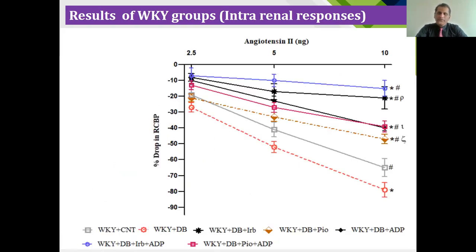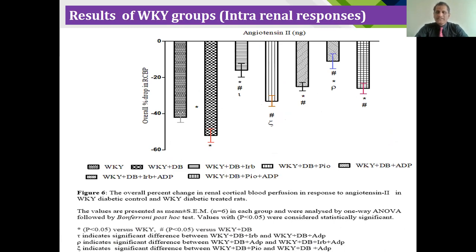Moving to angiotensin II: since we were using irbesartan as the angiotensin receptor blocker, we also infused angiotensin II intra-renally. Surprisingly and very interestingly, the percentage drop in the case of irbesartan combined with adiponectin was more pronounced compared to other drug combinations in terms of the percentage drop of renal cortical blood perfusion. As compared to previous treatments where pioglitazone showed more effect, in this intra-renal infusion of angiotensin II, the receptors were already blocked with irbesartan treatment, meaning the irbesartan-adiponectin combination showed greater increase in the percentage drop of renal cortical blood perfusion.